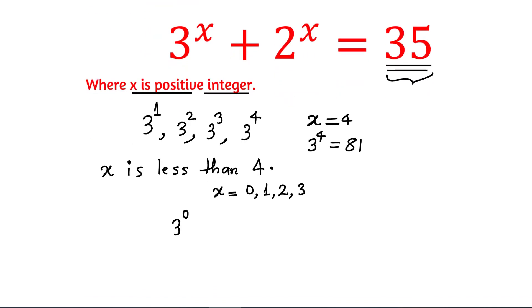3 raised to the power 0 plus 2 raised to the power 0, which is basically equals to 2, does not satisfy this equation. The right side is 35, so X cannot be 0.